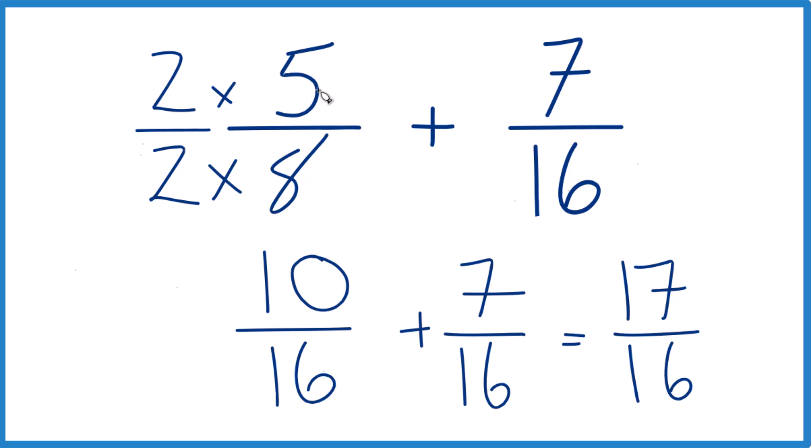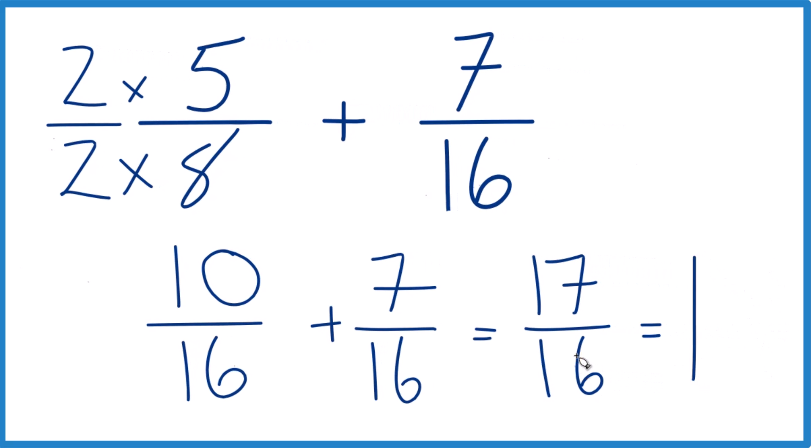That's what you get when you add 5 eighths plus 7 sixteenths. This is an improper fraction though, the numerator here is bigger than the denominator. Let's change it to a mixed number. 16 goes into 17, so 1 times 16 is 16, and we'd have 1 left over. Bring that 16 across, and we're done.